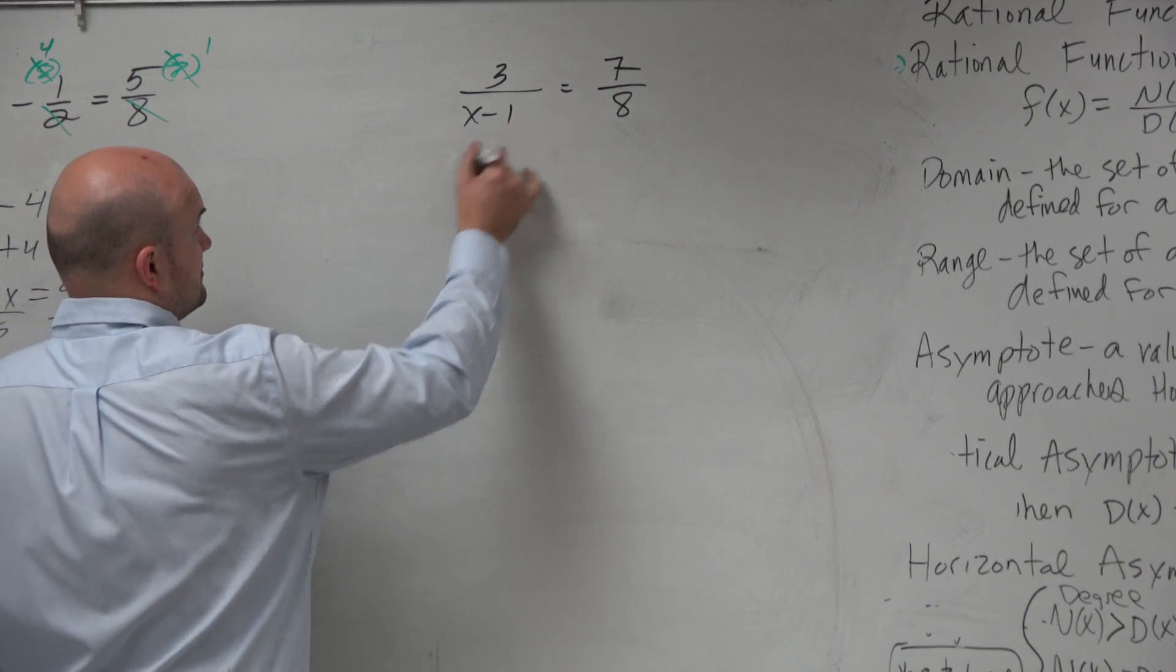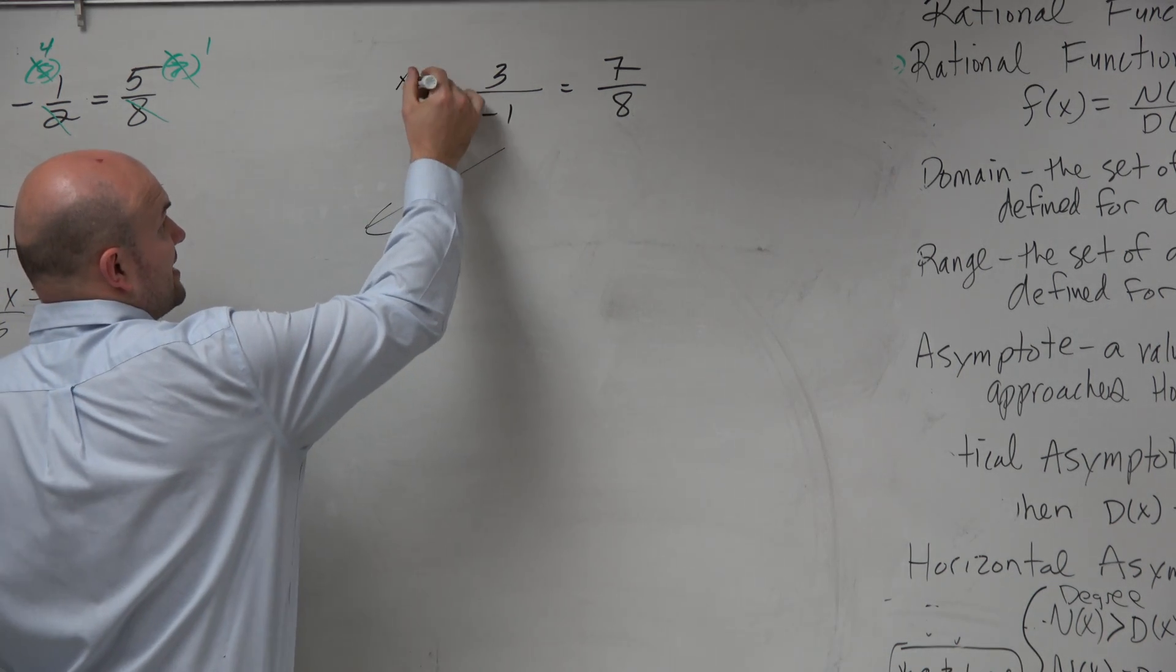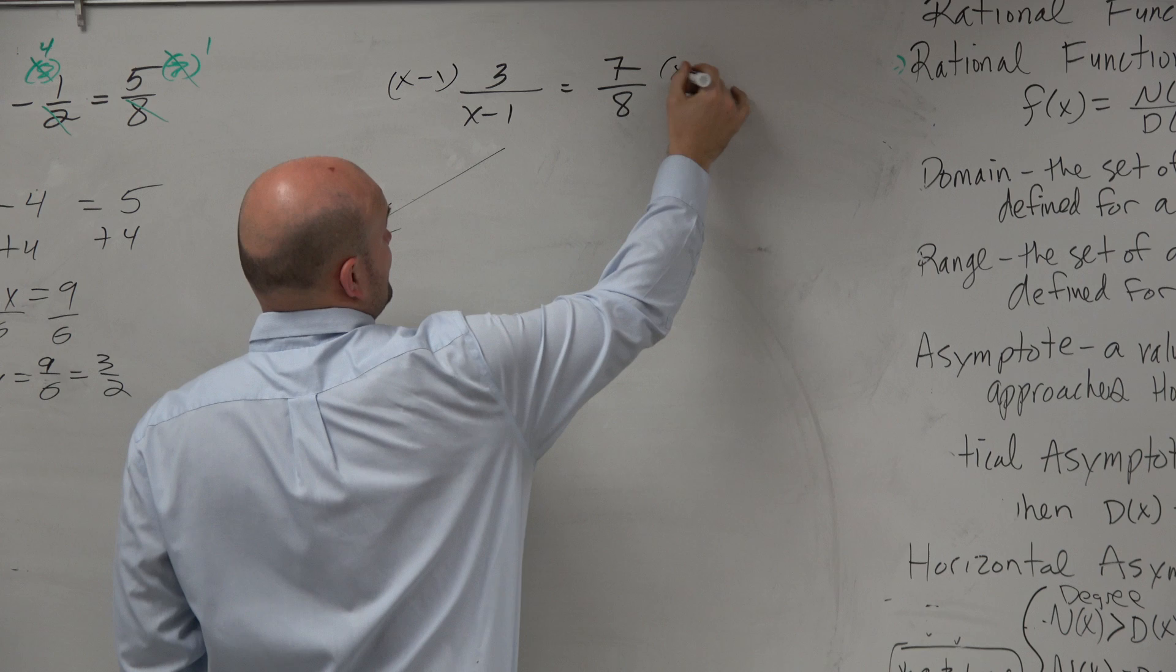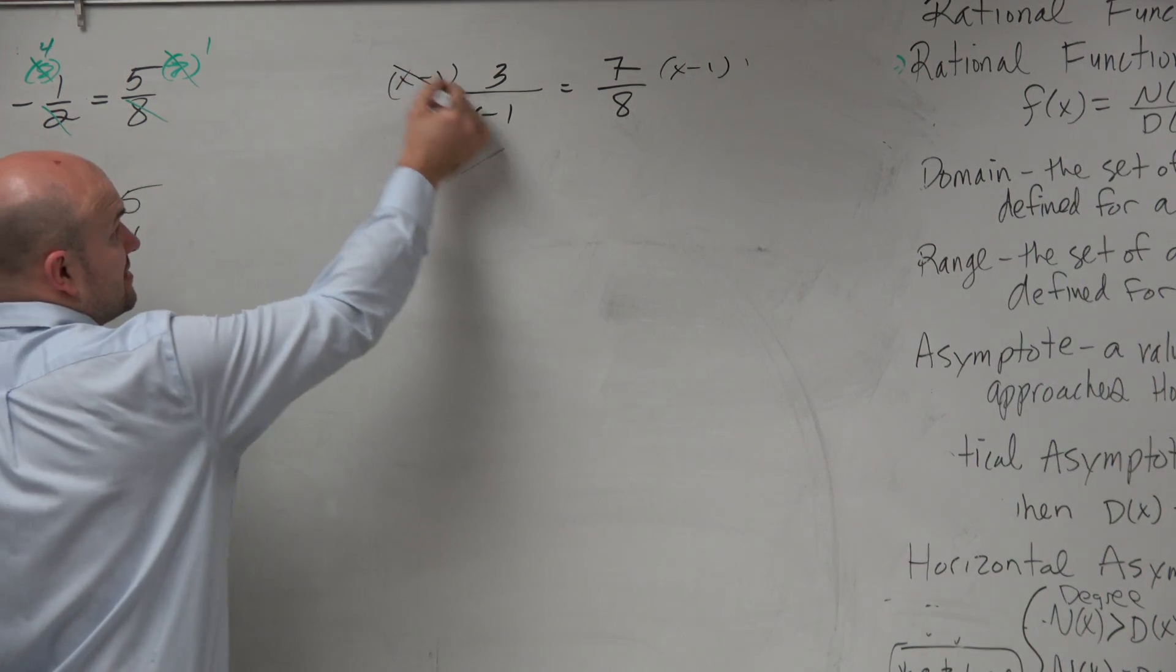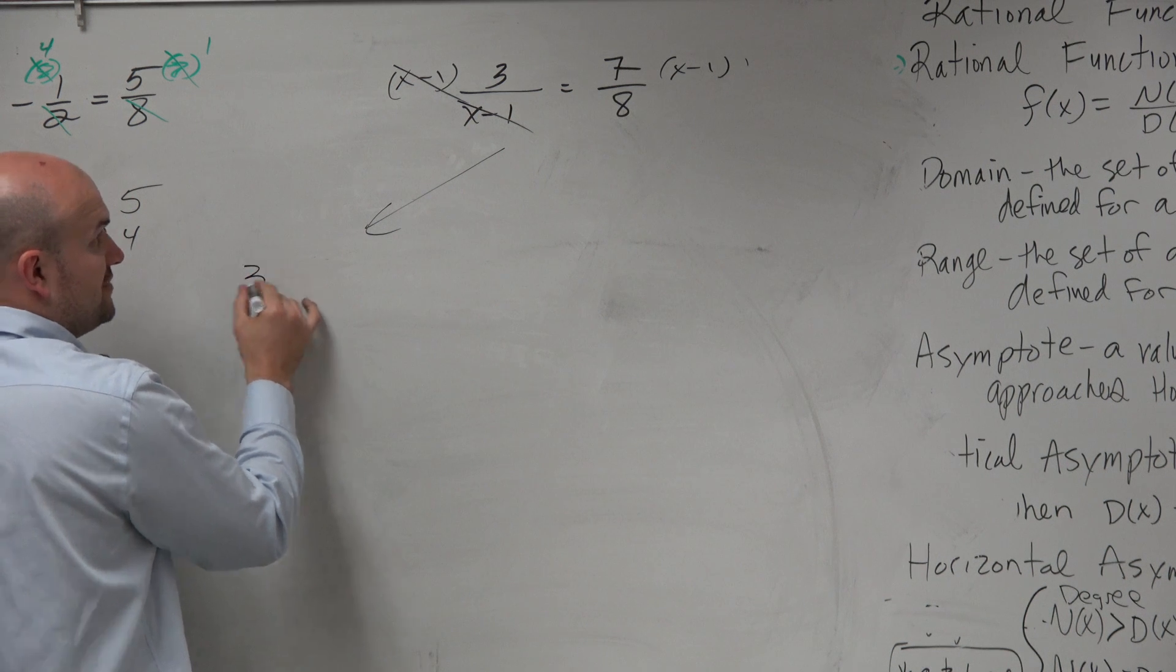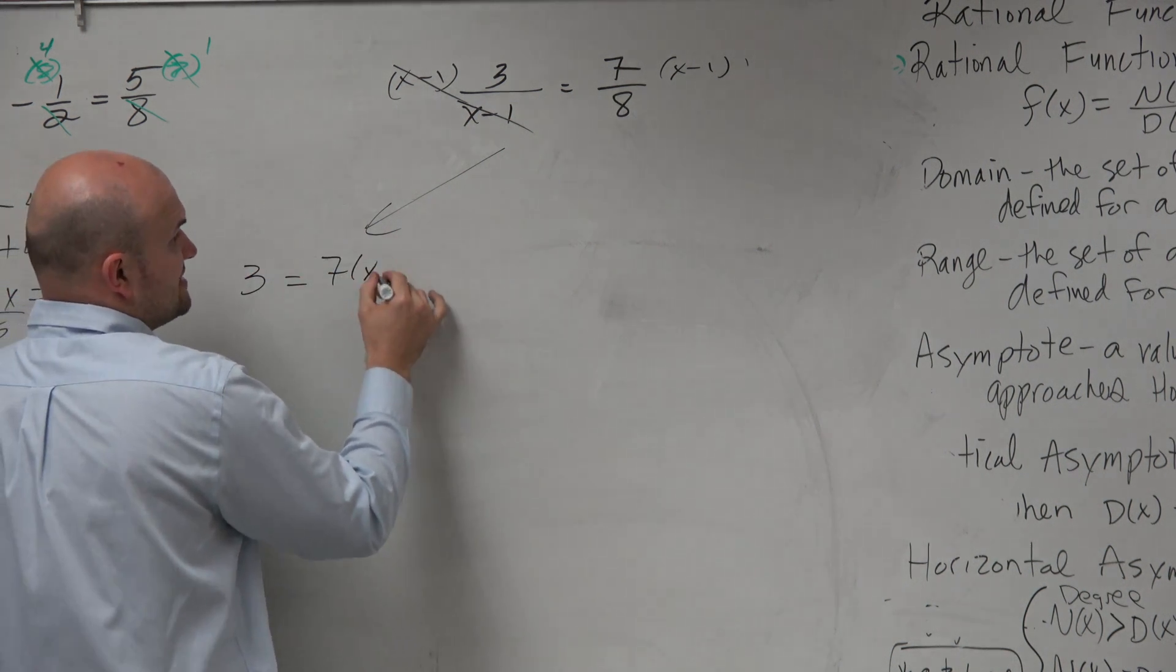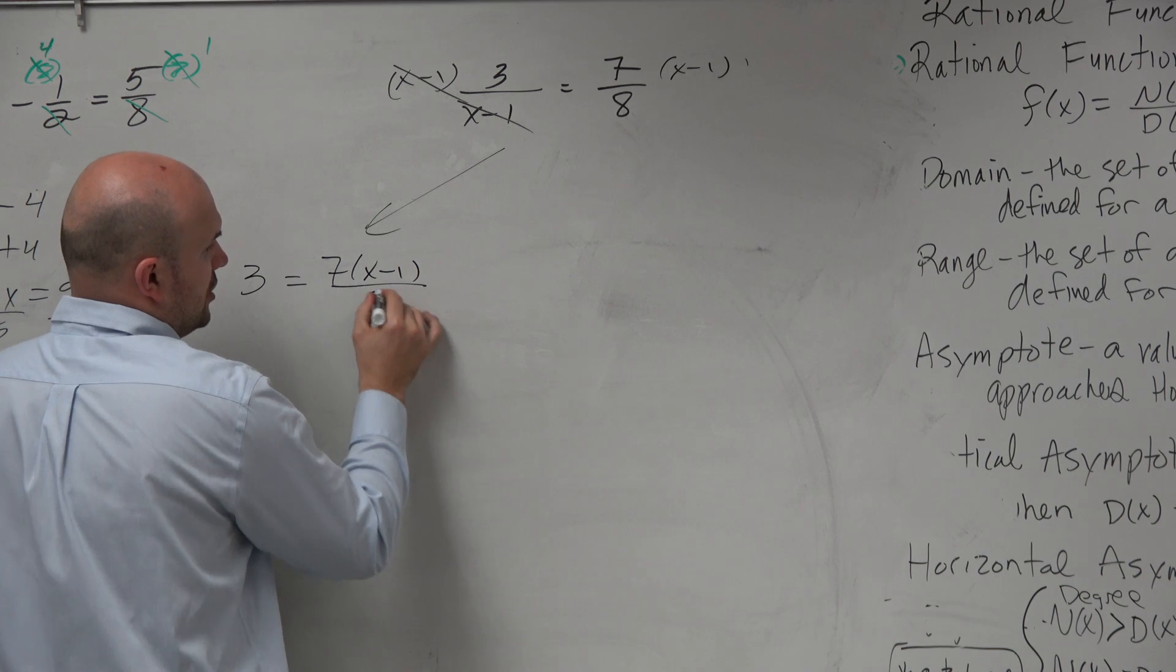So the first way is to multiply by x minus 1 on both sides. By multiplying by x minus 1 on both sides, that divides out. You're left with 3 equals 7 times x minus 1 over 8.